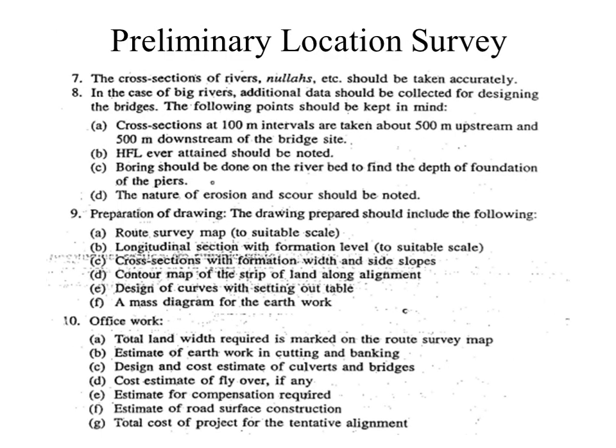In the preliminary location survey, cross sections of rivers, nalas, etc. should be taken separately. For big rivers, additional data should be collected for designing bridges: cross sections at 100-meter intervals are taken about 100 meters upstream and 5 meters downstream of the bridge site; the highest flood level ever attained should be noted; boring should be done on the river bed to find the depth of foundation of the pier; and the nature of erosion and scour should be noted.